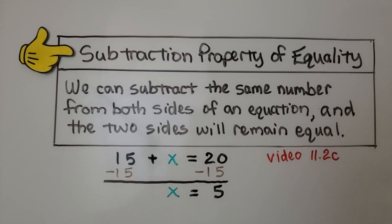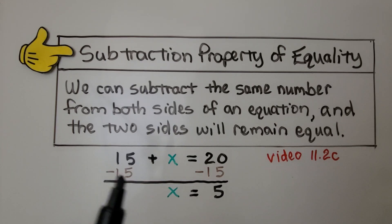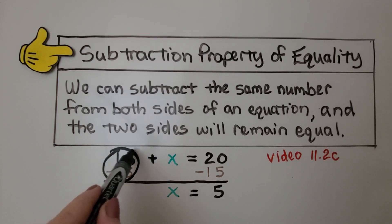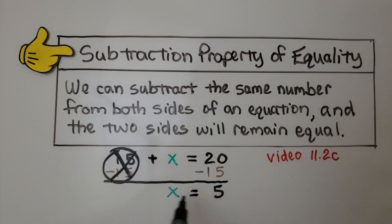We've learned the subtraction property of equality tells us we can subtract the same number from both sides of an equation and the two sides will remain equal. If we have 15 plus x equals 20, we could subtract 15 from both sides of the equal sign, create a zero pair, eliminate this 15, take 15 away from the 20, and we have 5. We know x is equal to 5.